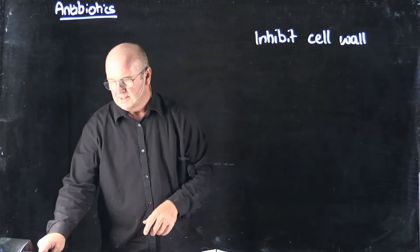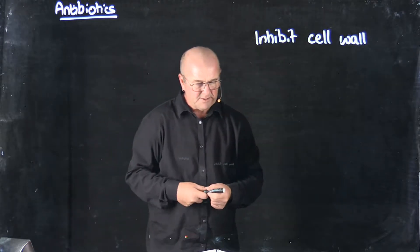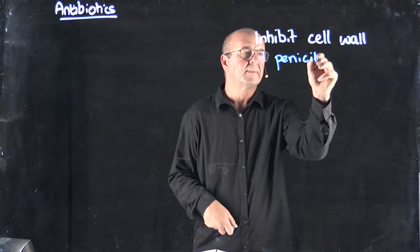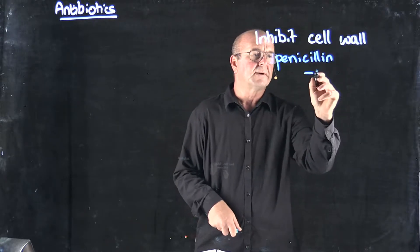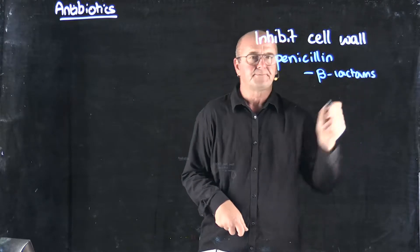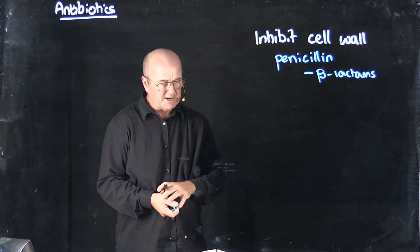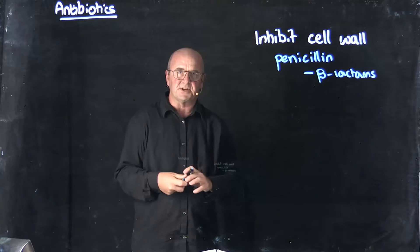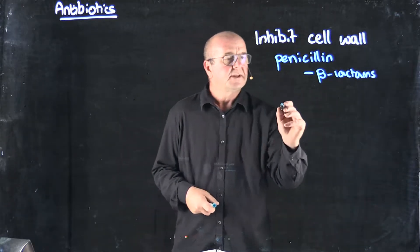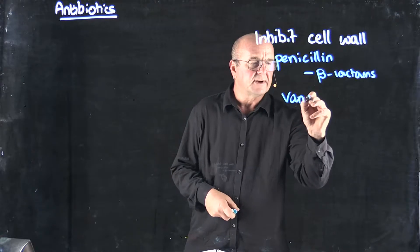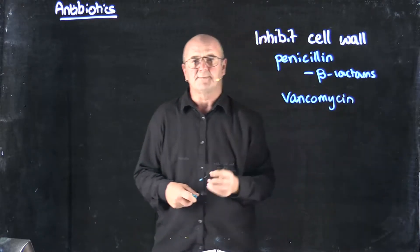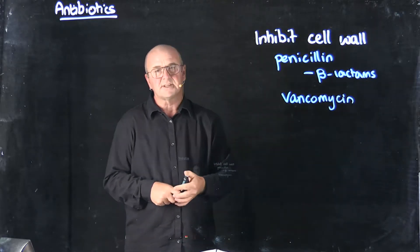Some common antibiotics that do that — that you've probably heard about — you've probably taken penicillin. Penicillin is a member of the class called beta-lactams, which are common antibiotics for general-purpose broad-spectrum use. You may also have heard of vancomycin, which works by inhibiting bacterial cell wall synthesis.